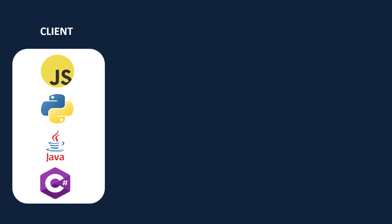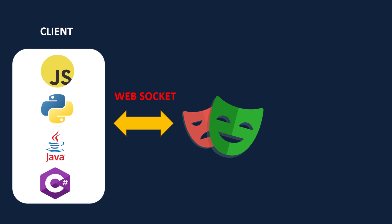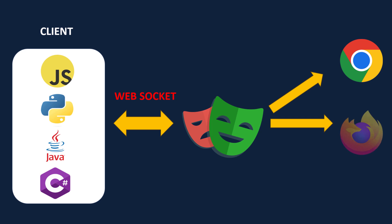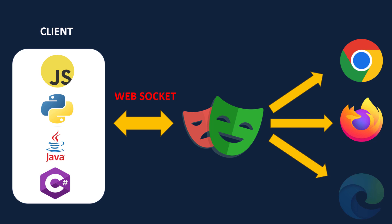Using these languages you will be writing your test scripts. Once you write your test scripts, you will be connected to the Playwright server using a WebSocket, and then the Playwright server will execute your tests on the different browsers. This is a simple architecture, but the important thing to understand is how WebSocket works.